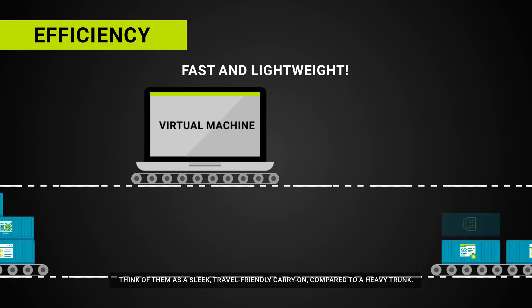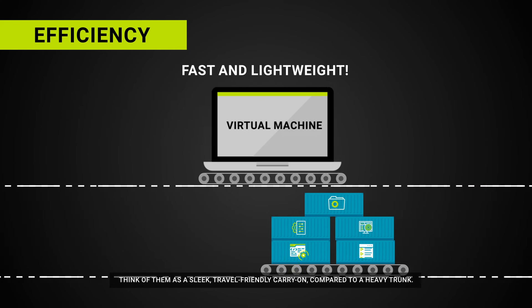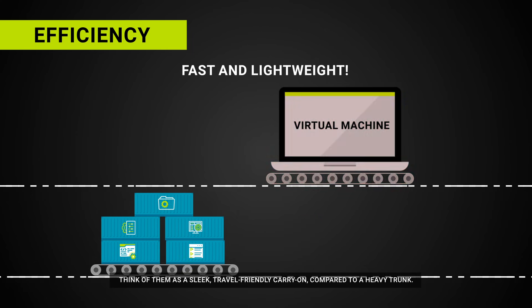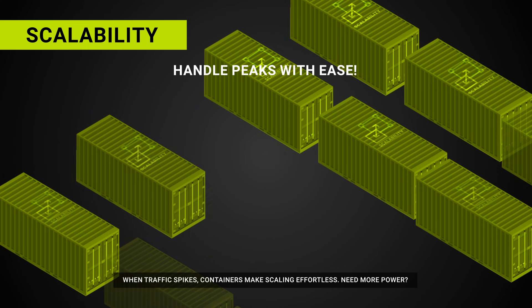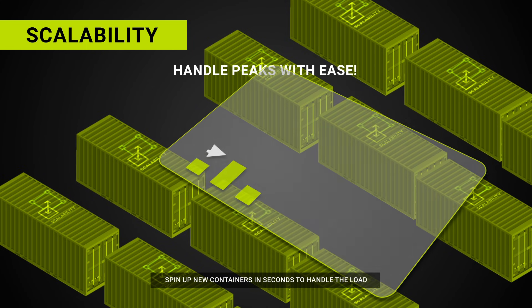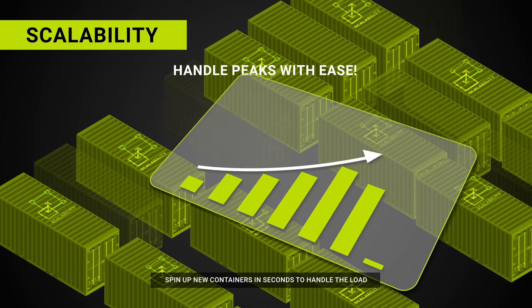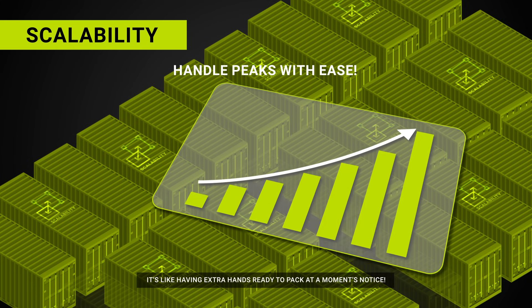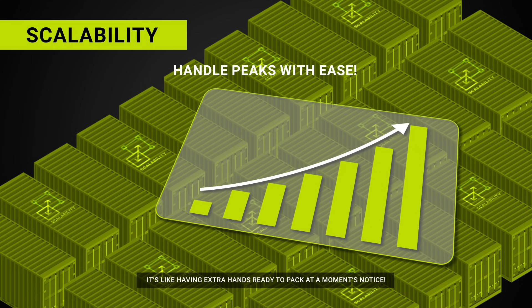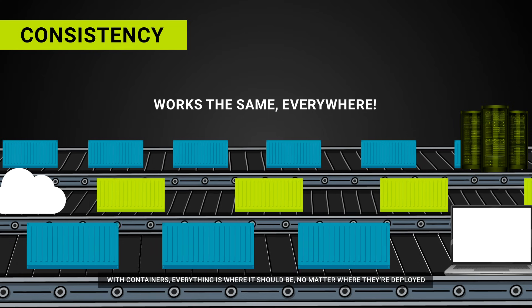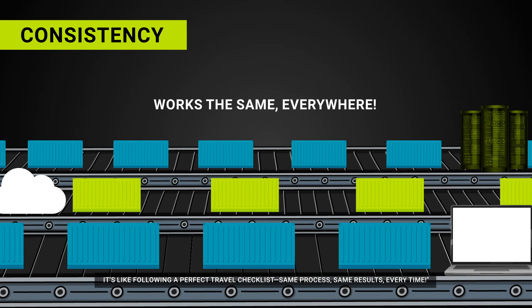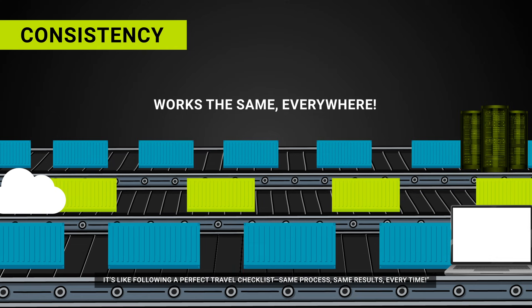Efficiency — unlike virtual machines, containers are super lightweight. They carry just the essentials, so they're fast to start and easy to manage. Think of them as a sleek, travel-friendly carry-on compared to a heavy trunk. Scalability — when traffic spikes, containers make scaling effortless. Need more power? Spin up new containers in seconds to handle the load. It's like having extra hands ready to pack at a moment's notice. Consistency — with containers, everything is where it should be no matter where they're deployed, same process, same results every time.